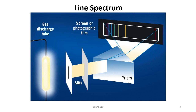Light will be emitted by the excited atoms and formed into a narrow beam that will be passed through a prism. The prism will divide the light into a few narrow beams with frequencies that are characteristic of the particular element emitting the light. Therefore, that line spectrum will be a fingerprint for whatever element we're observing.